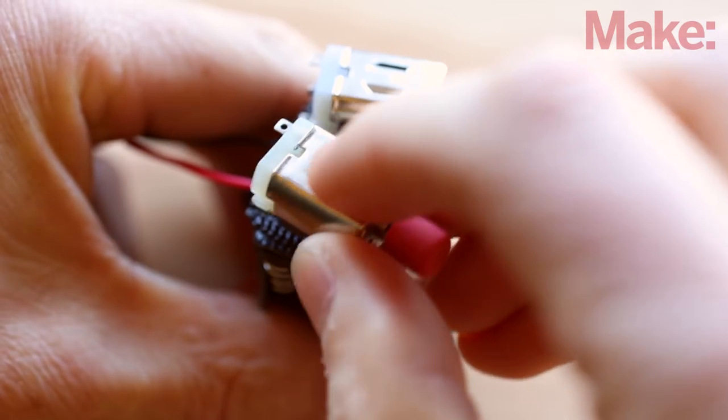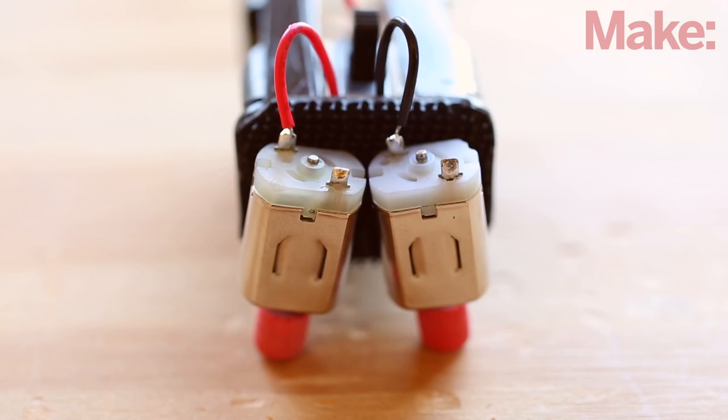Attach the motors to the front of the body using the Superlock tape. Attach the front red lead to the outboard terminal on the starboard or right motor. Attach the black lead to the inboard terminal on the port or left motor. Attach a second black lead made from leftover battery holder wire to this same terminal.